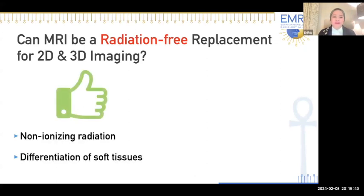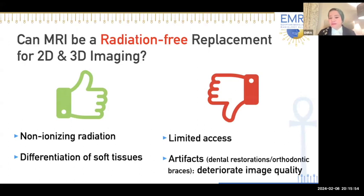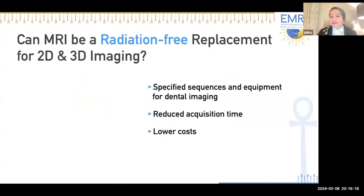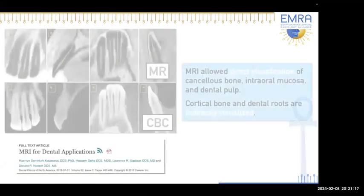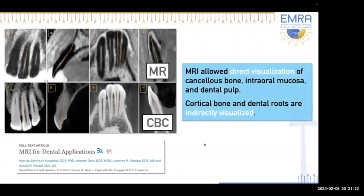MRI also allows us to reveal lesions such as a lymphoepithelial cyst in the parotid gland. Shifting to T2-weighted images reveals high internal signal due to fluid content, facilitating diagnosis. However, there is always a trade-off: MRI is non-ionizing with excellent soft tissue contrast, but dentists have limited accessibility and suffer from artifacts with dental restorations and orthodontic braces. By specifying sequences and equipment for dental imaging, we hope to reduce acquisition time, reduce artifacts, and lower costs.